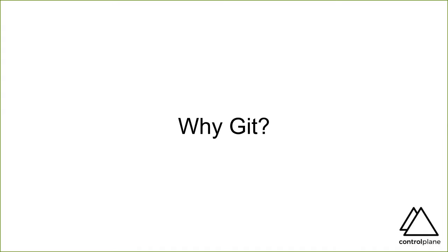Why GitOps? Because humans are fallible. As Brice has said, forcing everything through Git provides a useful choke point where we can enforce policy, demand automation, and revoke access to production systems from engineers. This gives us far more opportunities to catch the mistakes our pesky humans are making.